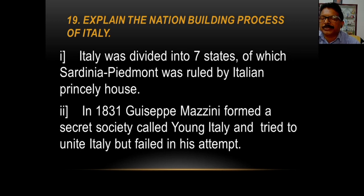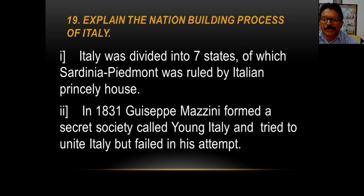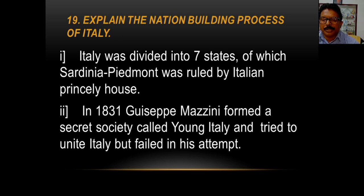Let us explain the nation-building process of Italy. Italy was divided into seven states, of which Sardinia-Piedmont was ruled by an Italian prince. In 1831, Giuseppe Mazzini formed a secret society called Young Italy and tried to unite Italy, but he failed in his attempt.